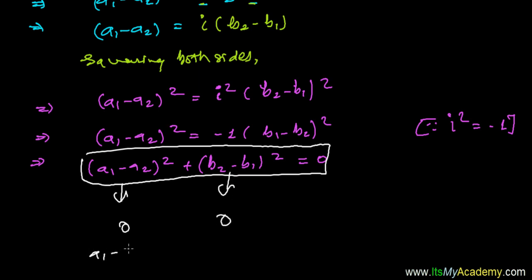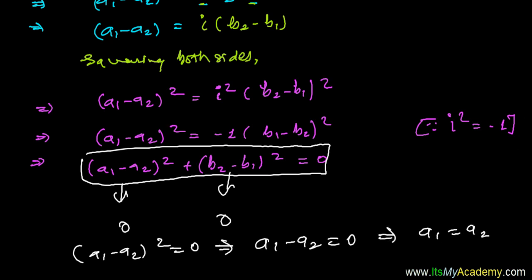It means (a1 minus a2) all square is zero, which gives finally us a1 minus a2 equals to zero, and that leads to a1 equals to a2.